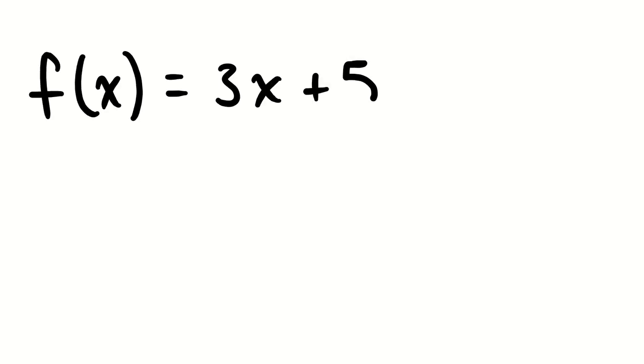We talked about this recently, but I want us to consolidate this a little bit more. There are a couple different skills we want to develop around this topic. The topic is function notation — how do we notate functions mathematically? We're going to use a notation that looks like this: f of x. This f is the name of the function, and this function called f takes a single argument — just one value getting passed to it.